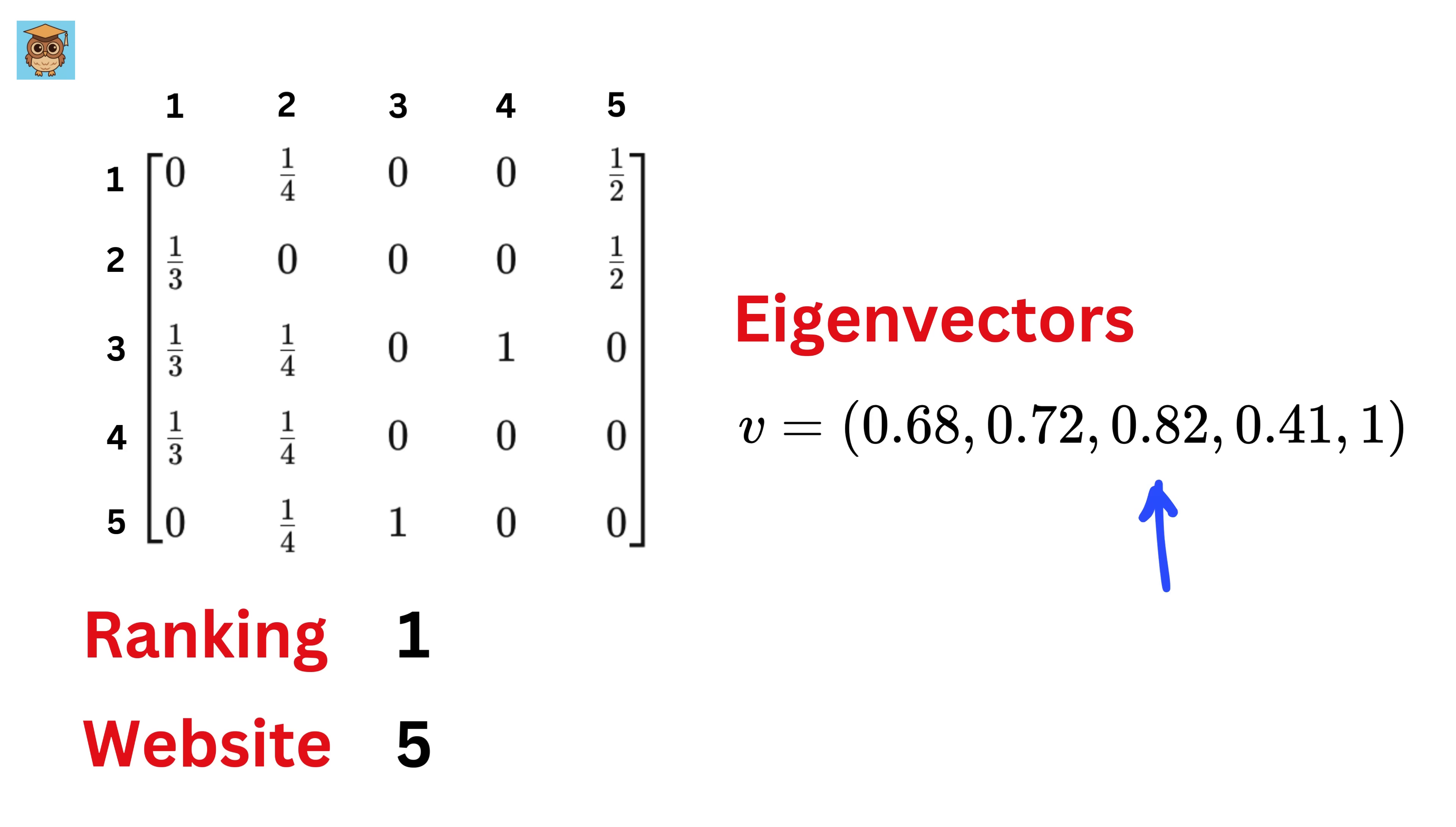Now this is the second highest number, which is for website 3, and thus website 3 will be ranked 2nd by Google. This way we get the following ranking of all the websites. This is exactly how Google's PageRank algorithm revolutionized web search in its early days. This is just one of the many places eigenvalues show up.